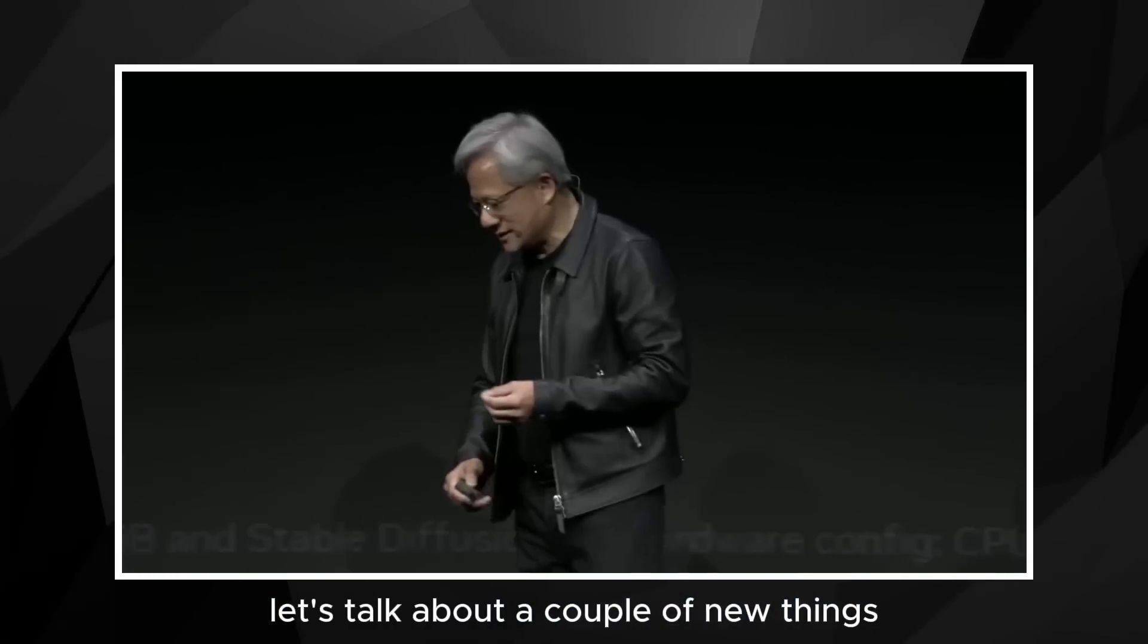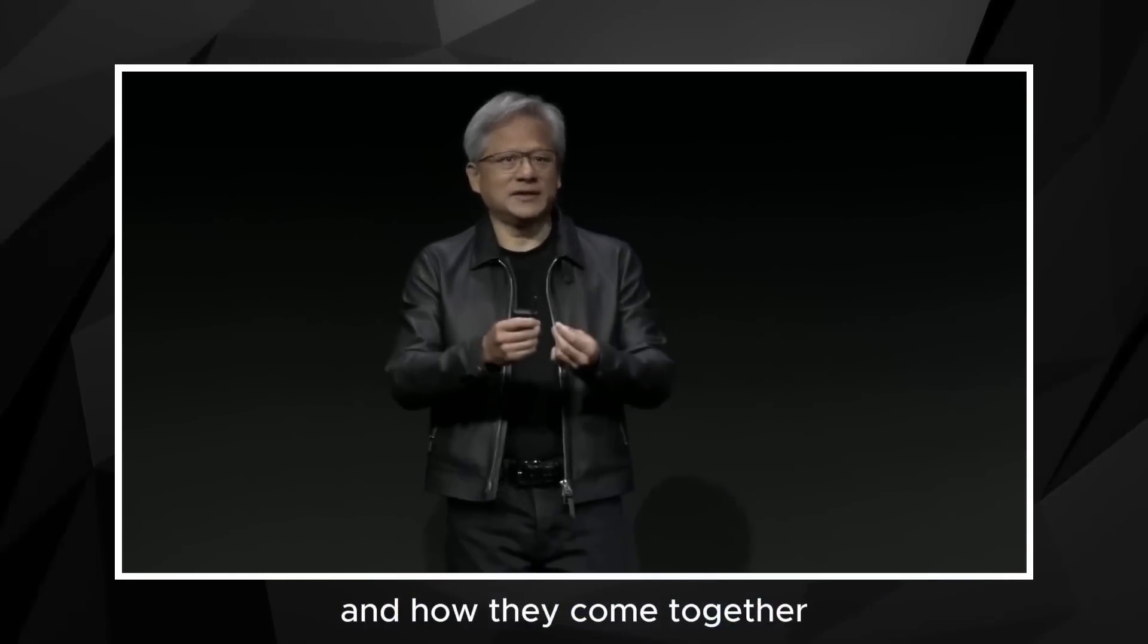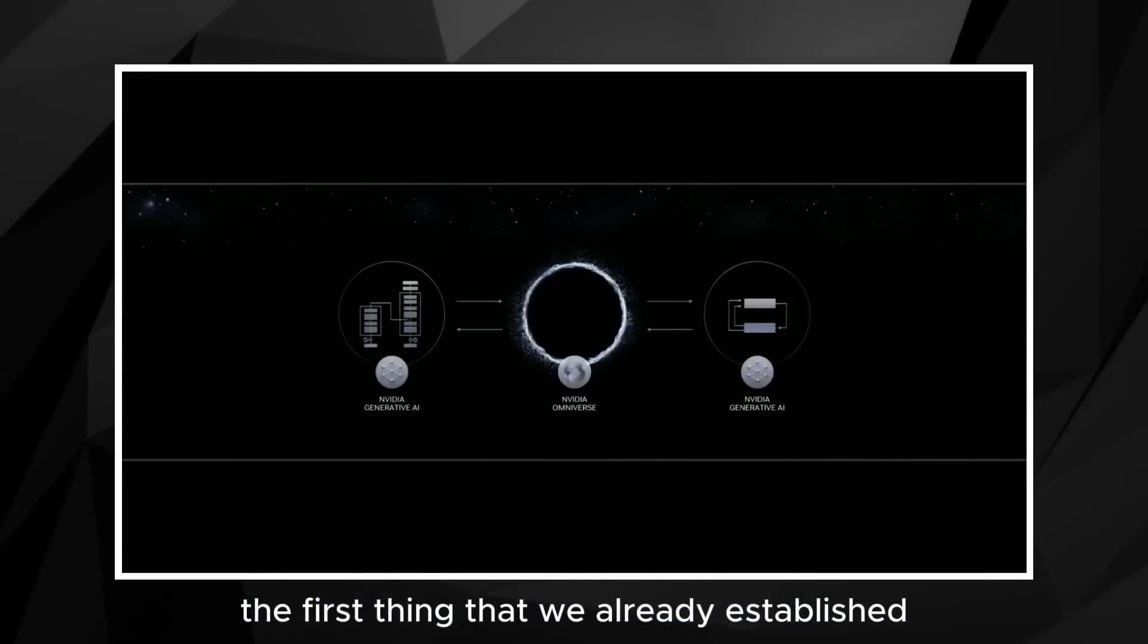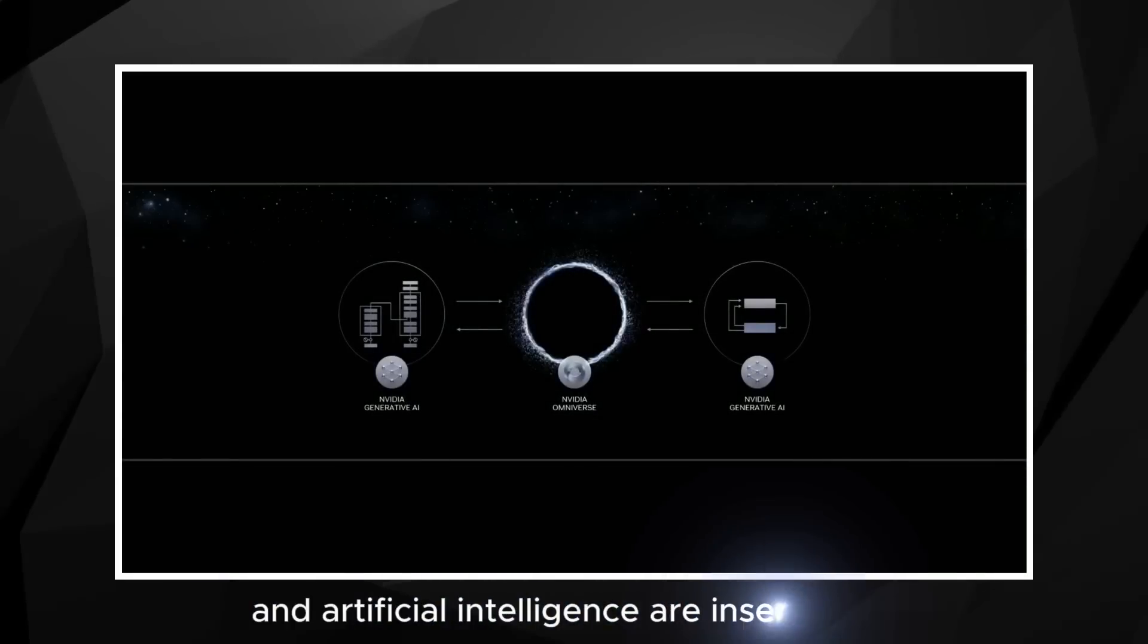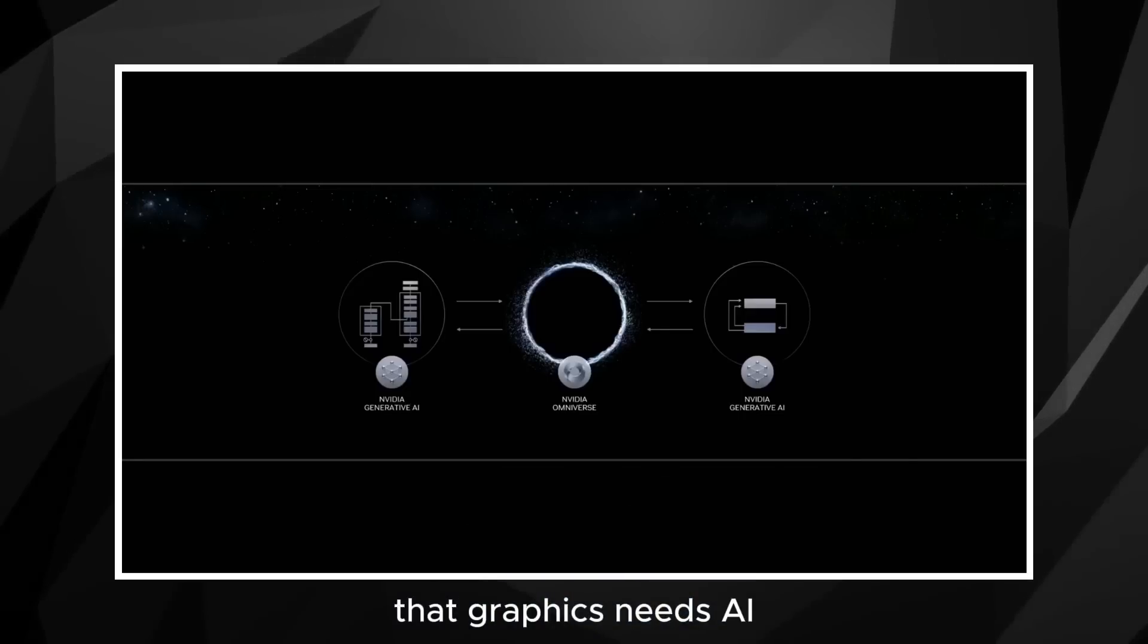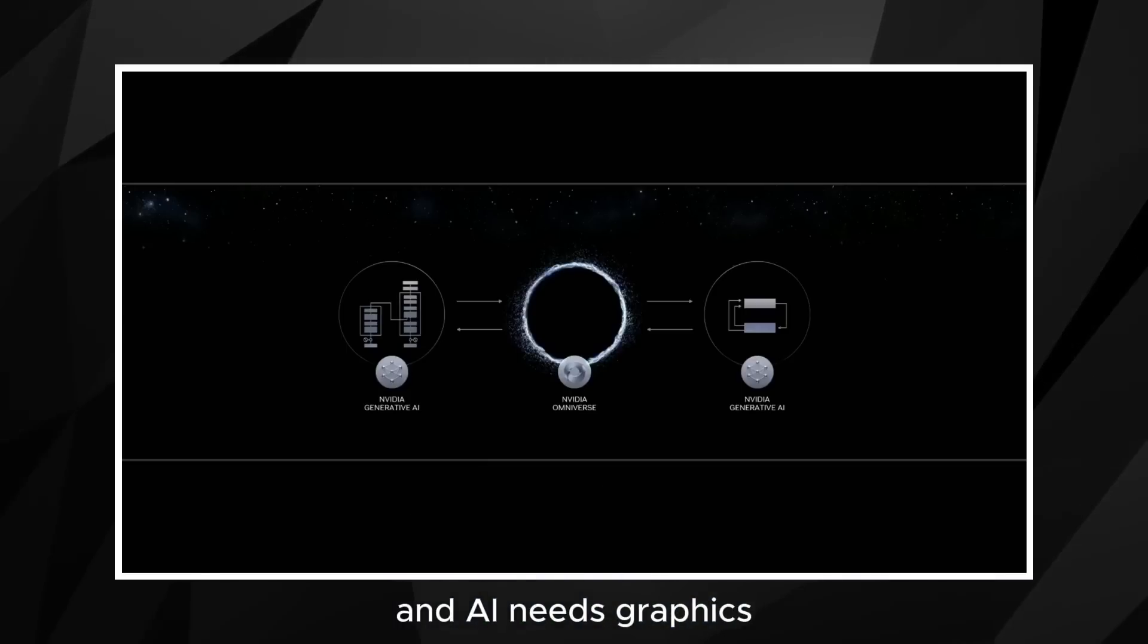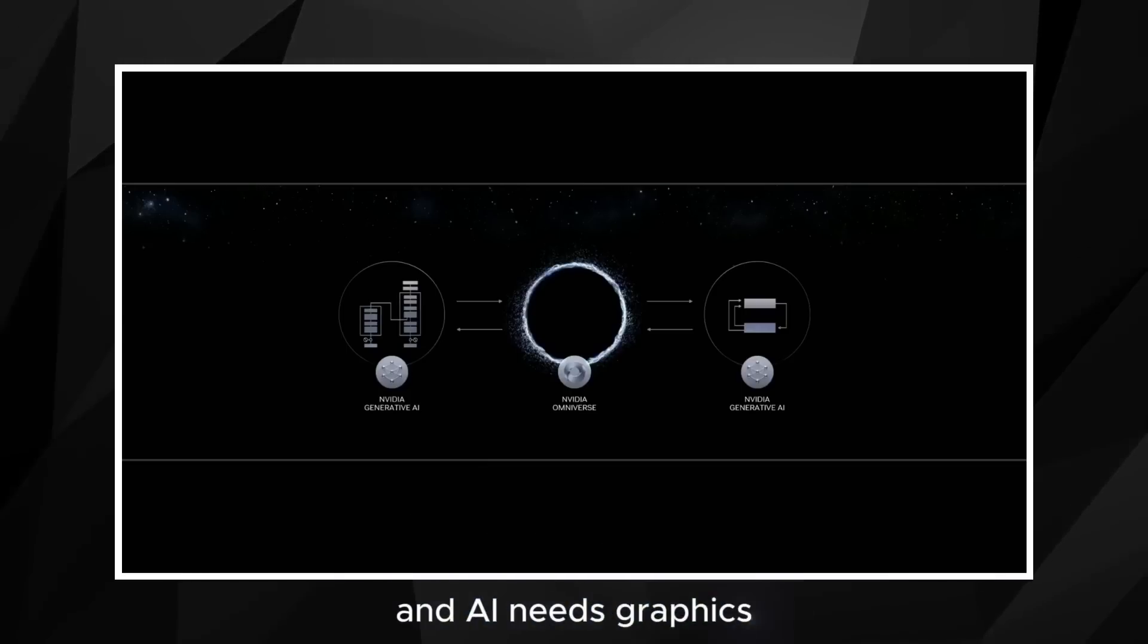Let's talk about a couple of new things. Today I want to talk about omniverse and generative AI and how they come together. The first thing that we already established is that graphics and artificial intelligence are inseparable. Graphics needs AI and AI needs graphics.